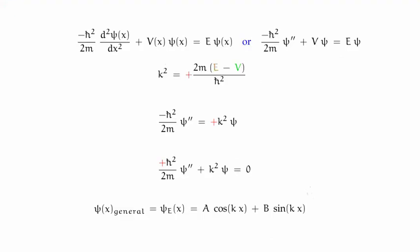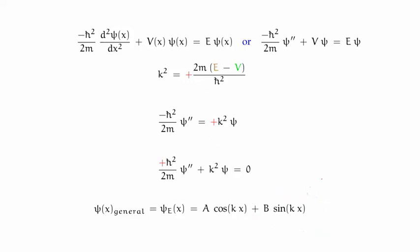So before I finish, you might be asking: why is it that in this solution we get a linear combination of cosines and sines, whereas for a physically identical well going from x equal to 0 to x equal to L we only get the sine solutions? And the answer is that in both cases, really, we are getting the same linear combination of cosines and sines.